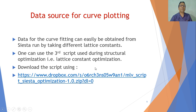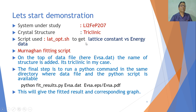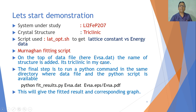You can download this optimization script from my Dropbox directly. The system under study is Li2FePO4 and the crystal structure is triclinic. The script used to get the lattice constant versus energy data is lattice_optimization.sh. We will now use the Murnaghan fitting script, but before using it we need some modification in the e_versus_a.dat data file, where we introduce the name of the structure — in this case triclinic — and use the command: python fit_results.py with the data file. Let's start the demonstration.